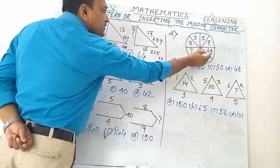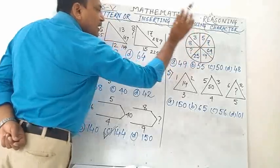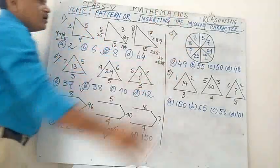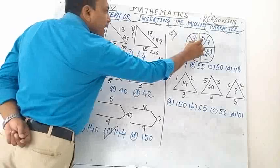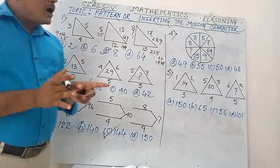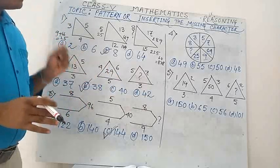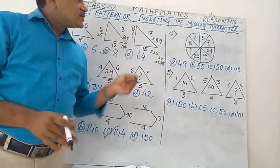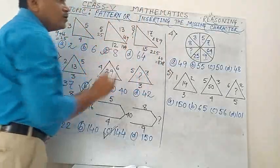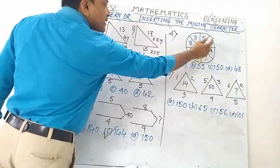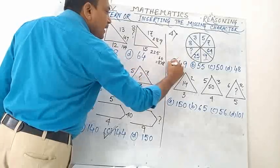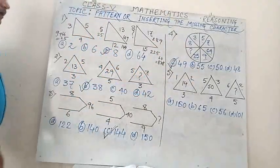Here 8 is opposite 64 — 8² = 64. Here 3 is opposite 9 — 3² = 9. Here 5 is opposite 25 — 5² = 25. So one part is the square of the other. In the opposite sector to 7: 7×7 = 49. So the answer is 49.